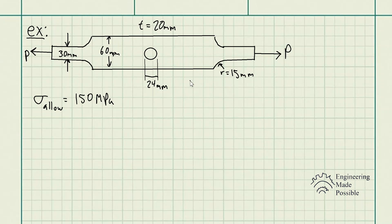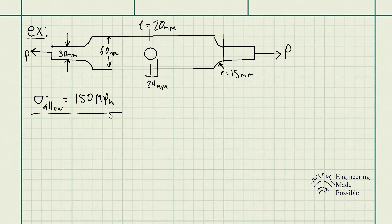We can already see that there are two locations where there are going to be stress concentrations: one in the middle due to the hole, and another one due to the corner. These two locations are the locations of interest because that's where the object is going to experience the maximum stress, and we need to design so these points do not experience stress greater than 150 megapascals.